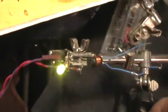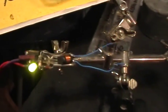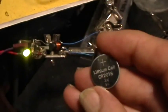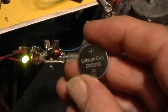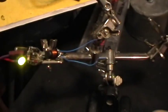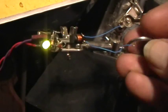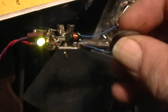Okay, and here is a CR2016 button cell. This is a 3 volt button cell. And what I'm going to do is just use it to pulse that little inductor.